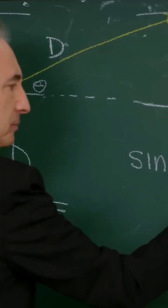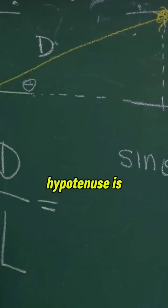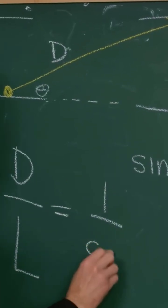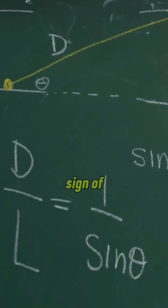Opposite is L. Hypotenuse is D, right? And so this ratio is just one over sine of theta.